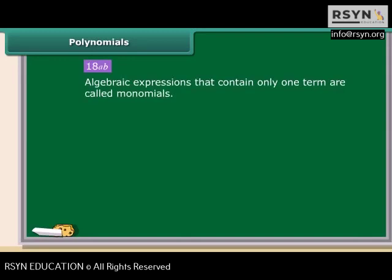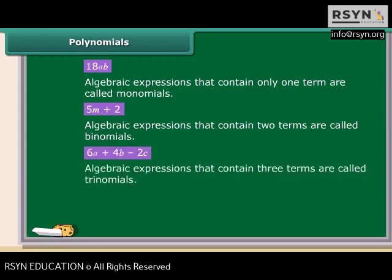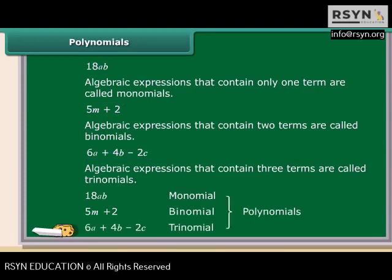An algebraic expression with only one term is called a monomial. An expression like 5M plus 2, which has two terms, is called a binomial. The expression 6A plus 4B minus 2C has three terms and is called a trinomial. Remember, all algebraic expressions that have one or more terms are called polynomials. Therefore, monomials, binomials, and trinomials are all polynomials.